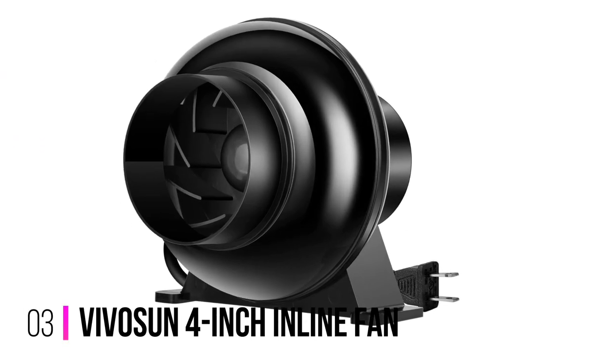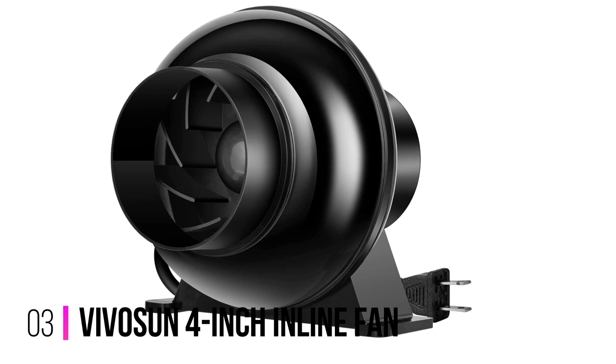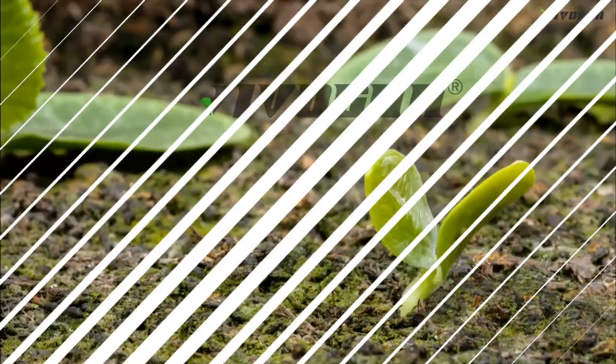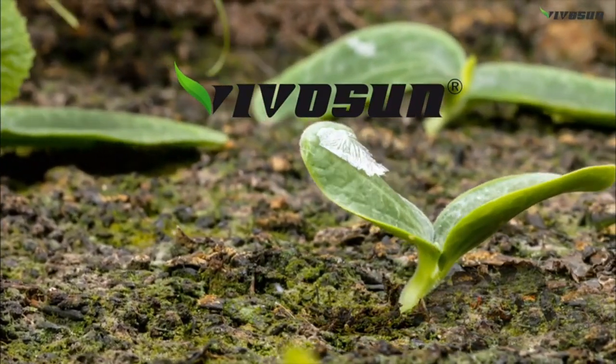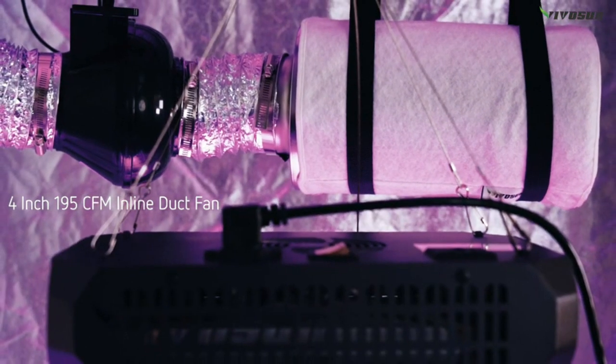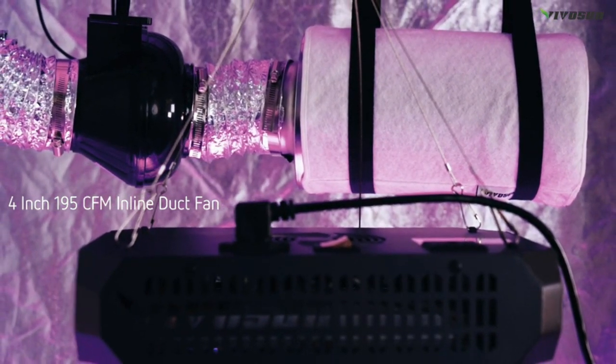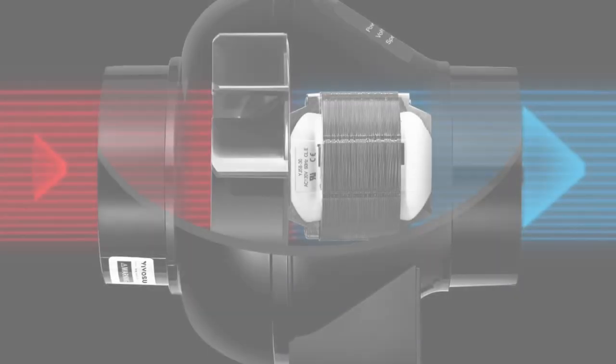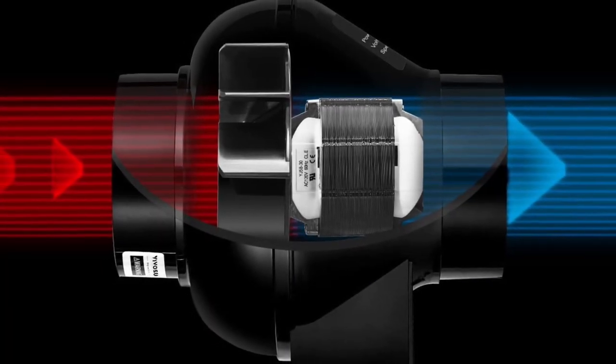Number 3, Vivosun 4-Inch Inline Fan. While this quiet inline fan is a budget-friendly option, it sacrifices very little in the way of quality. Importantly, it has an airflow of 195 CFM at 2,500 RPM, and a noise level of 30 dB.